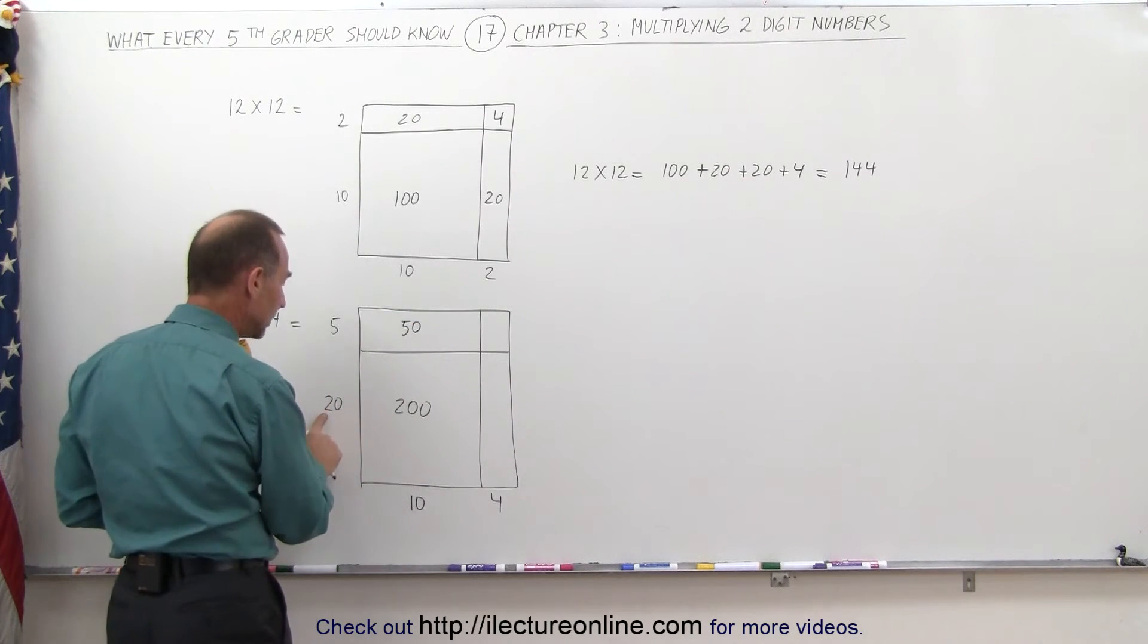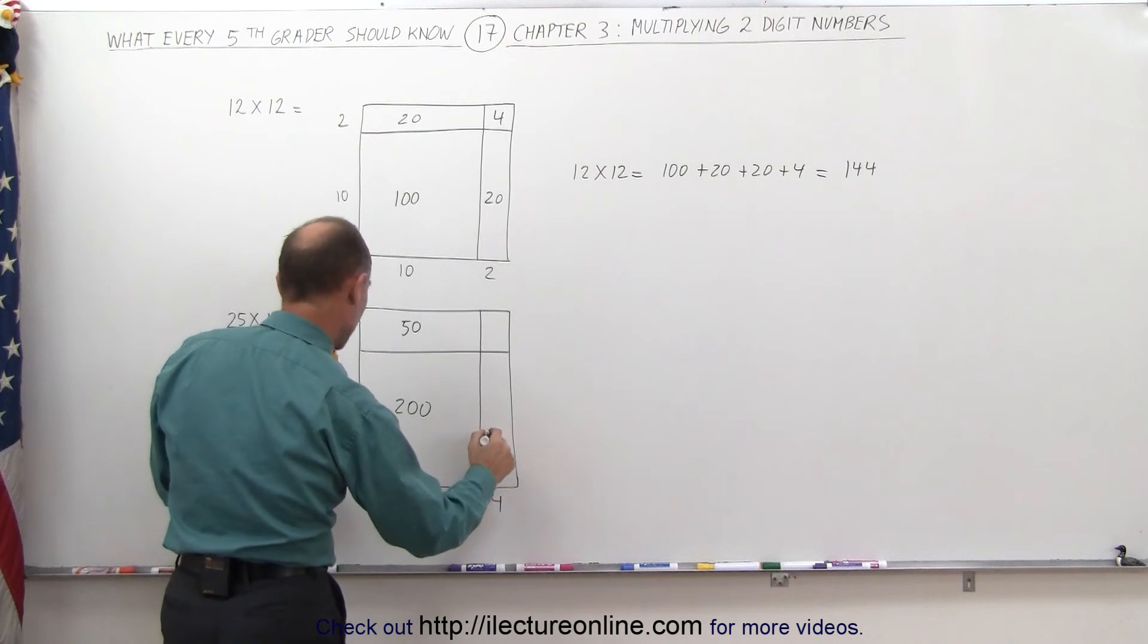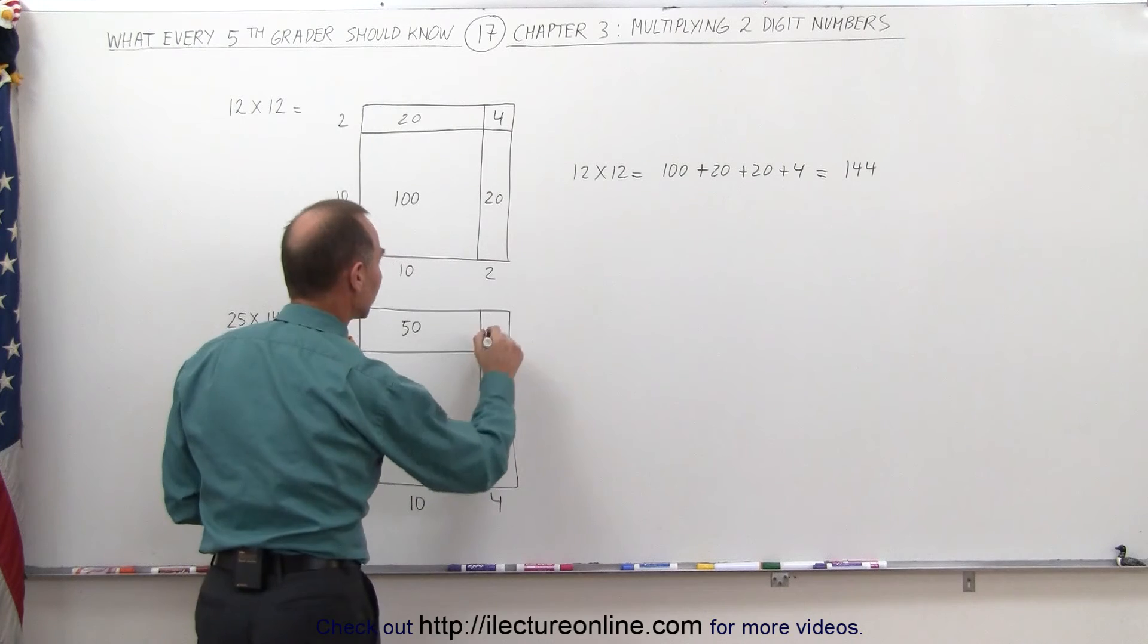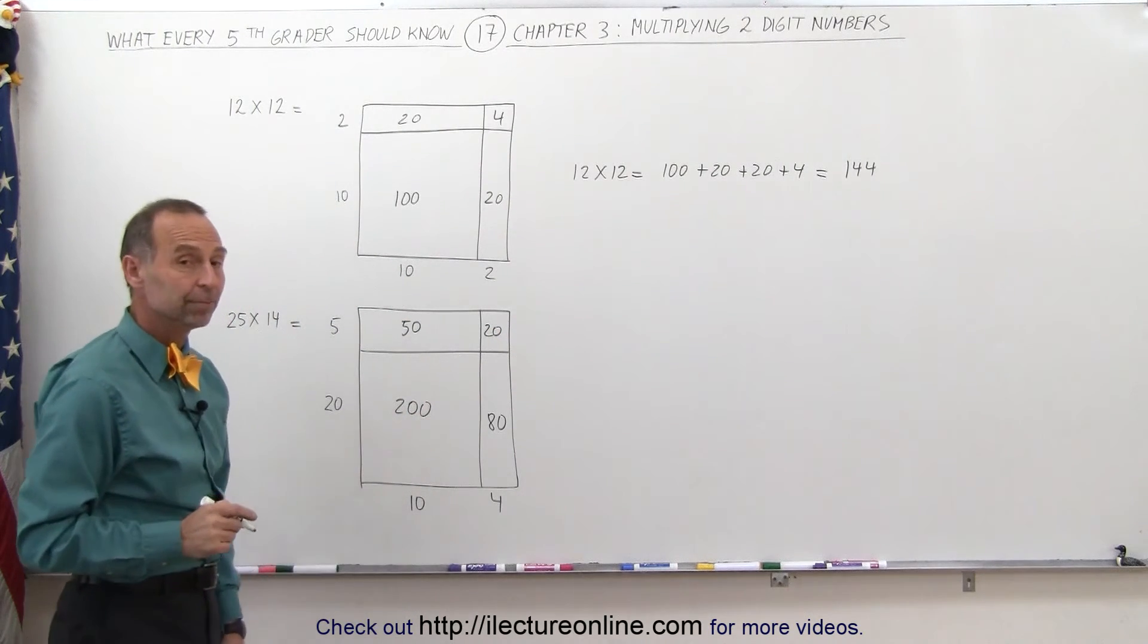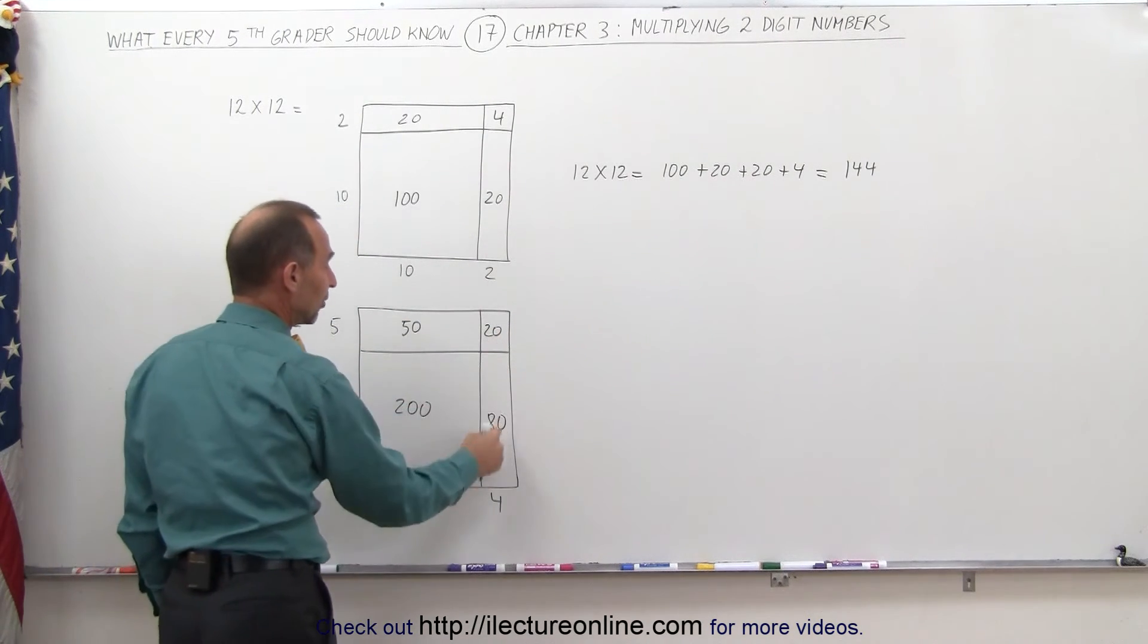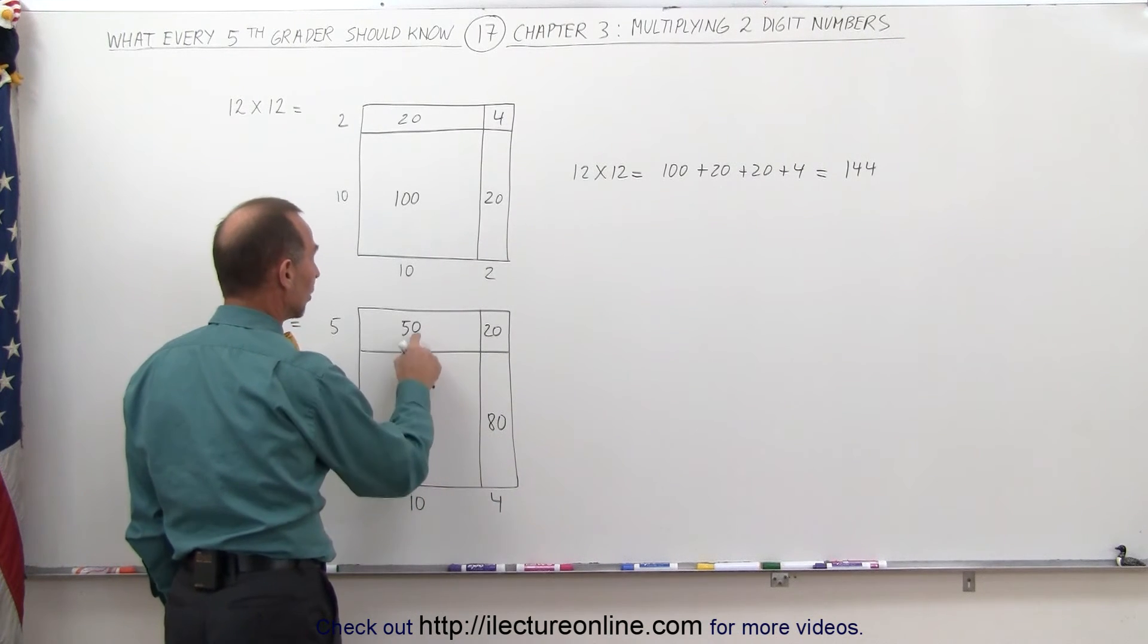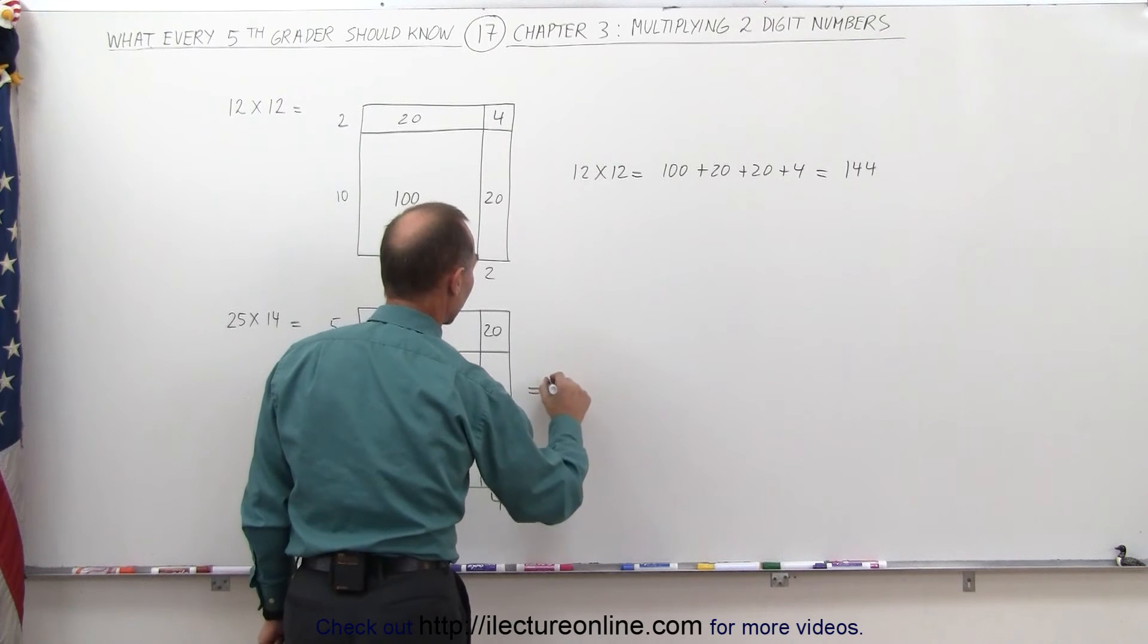Here I'm going to multiply the 20 times the 4, which gives me 80. And finally, 5 times 4, which gives me 20. And all I have to do is add all these together. Now notice that 20 plus 80 is 100. 100 plus 200 is 300. And 300 plus 50 is equal to 350.